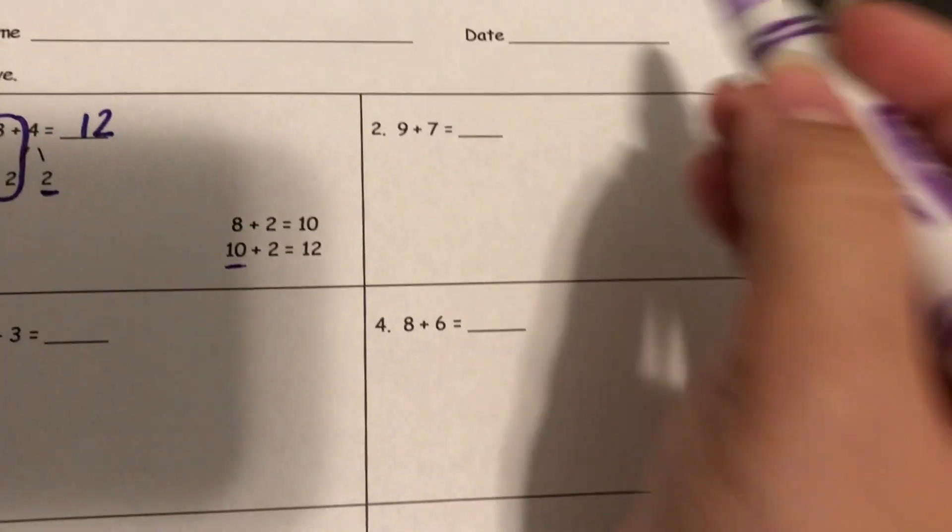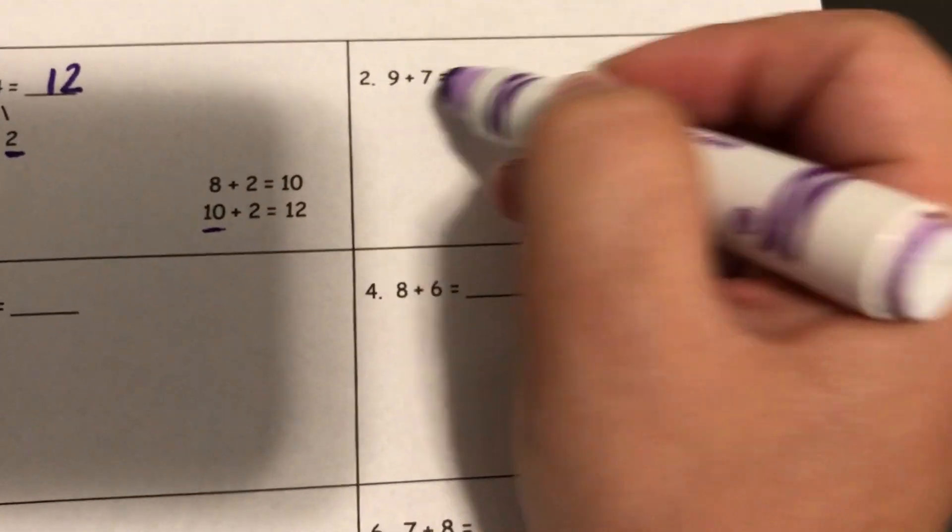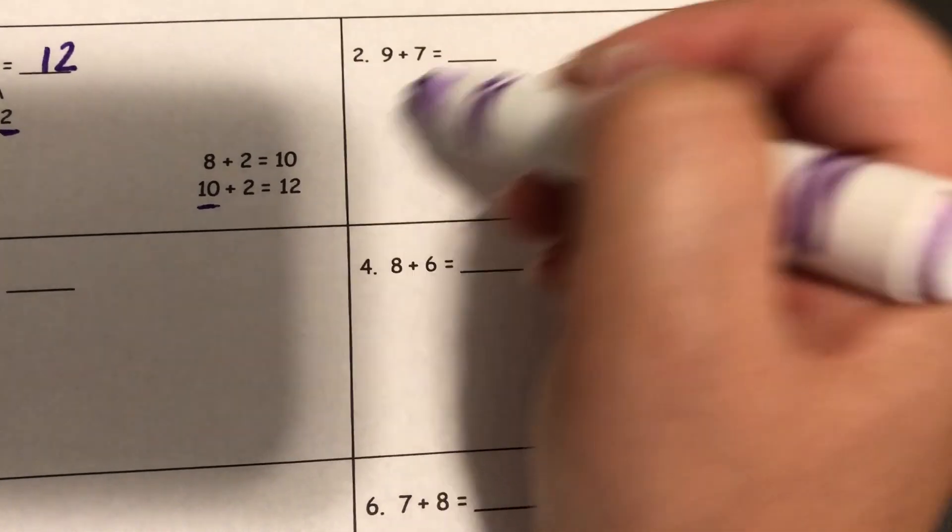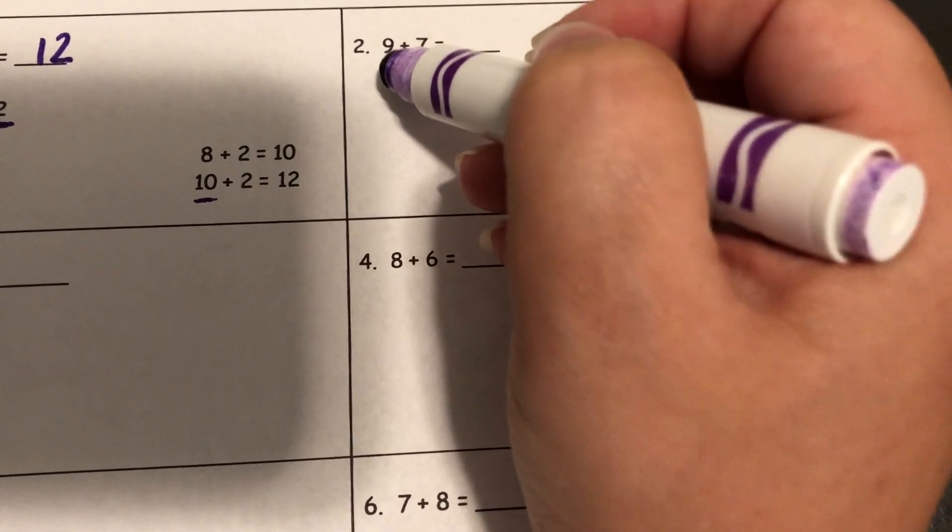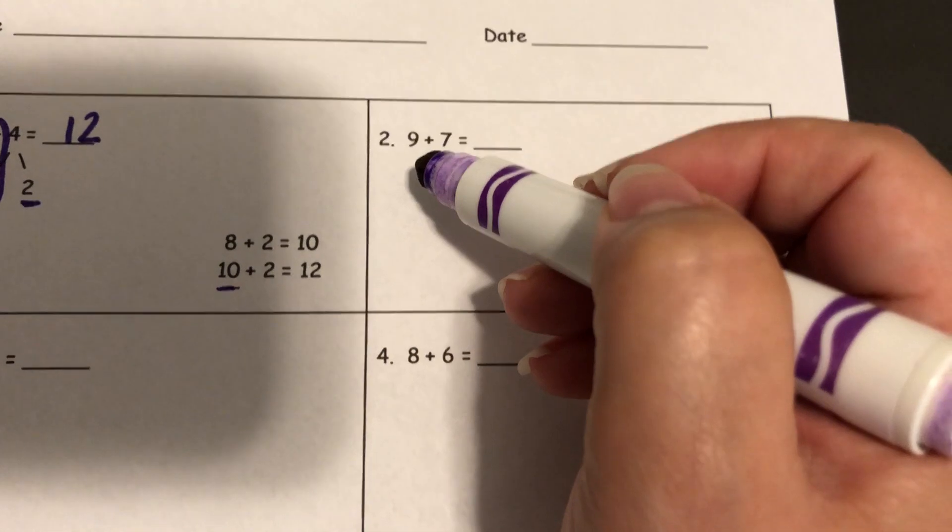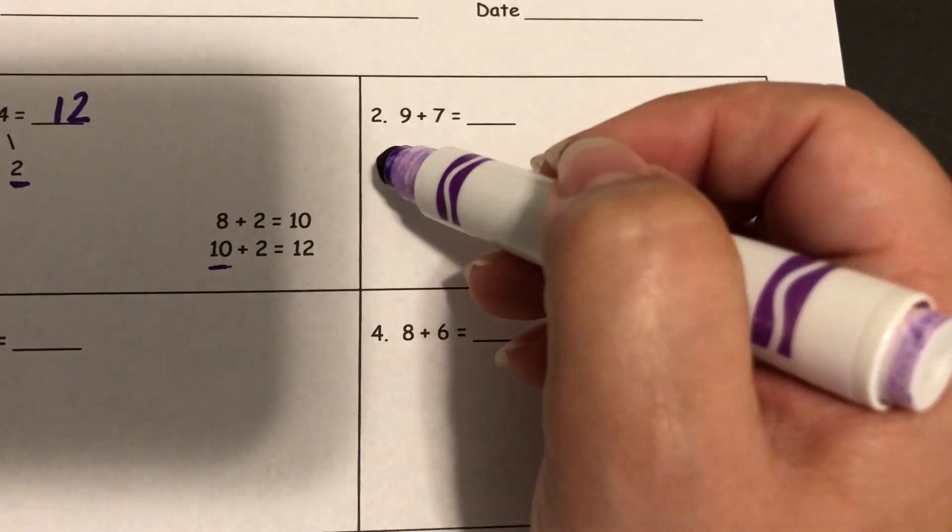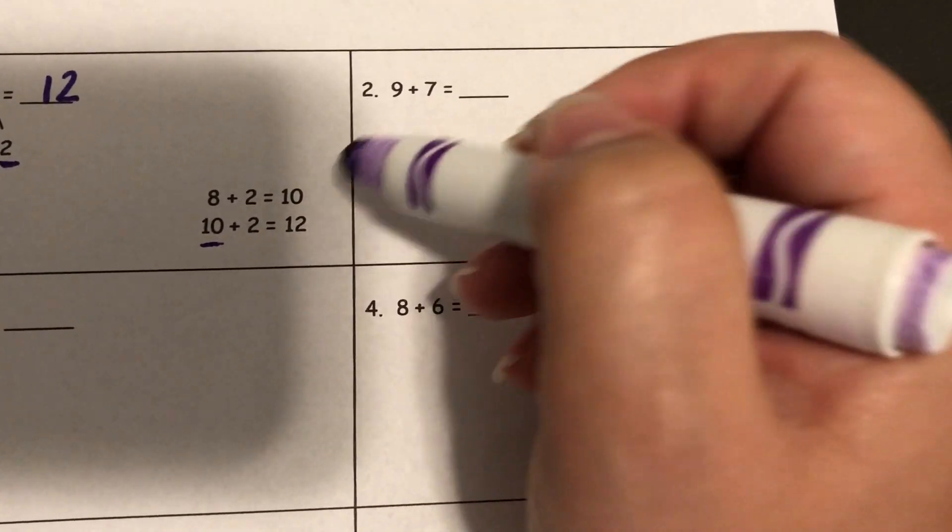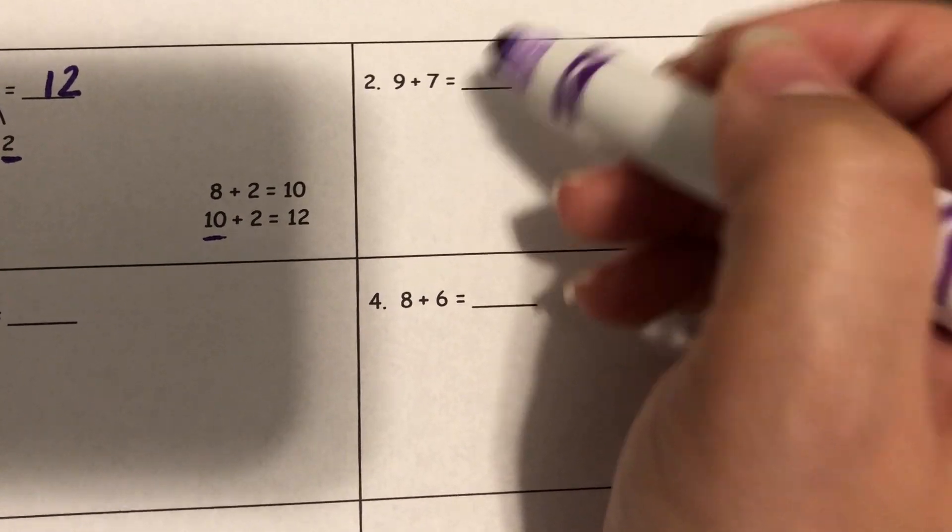All right, we can look at another one. So for 9 plus 7, we need to look at it and think, all right, well 9 is really close to a 10. What do I need to add to 9 to make it a 10? It's a 1.